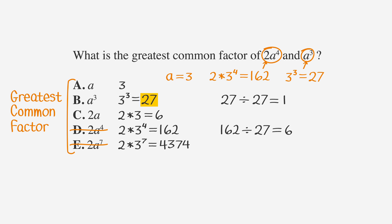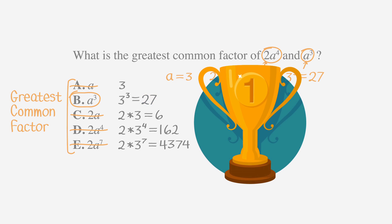Since we were looking for the greatest common factor, we can cross out a and c, since they're smaller than b. Just like that, we have our correct answer. Now, it's time to celebrate.